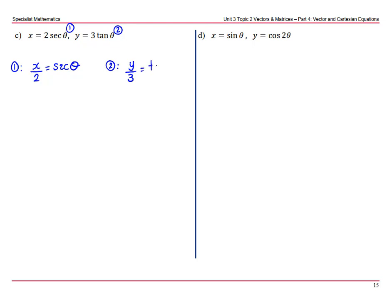So let's square, we'll end up with x squared over 4 equals sec squared theta, equation 2 squared, y squared over 9 equals tan squared theta. Hopefully in the back of your head, you're thinking of the identity, which is tan squared theta plus 1 equals sec squared theta, or 1 equals, rearranging it, sec squared theta minus tan squared theta.